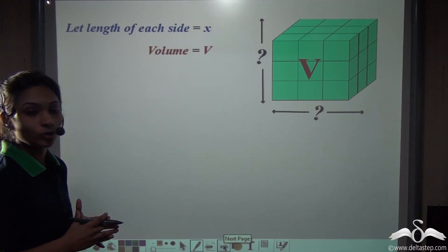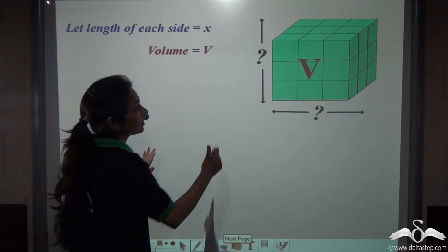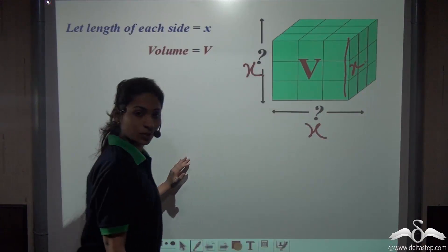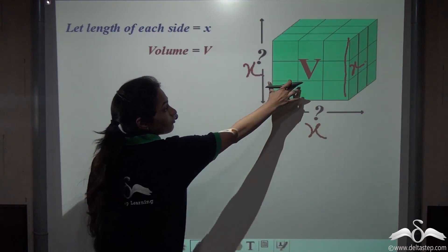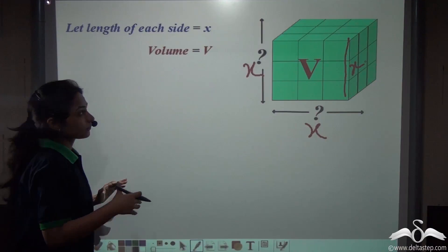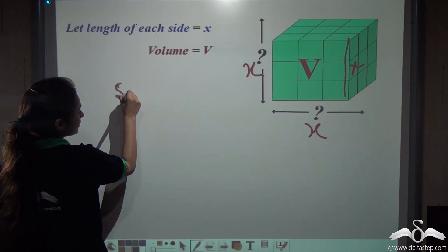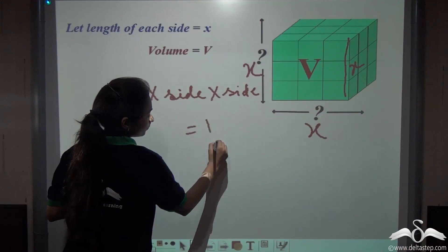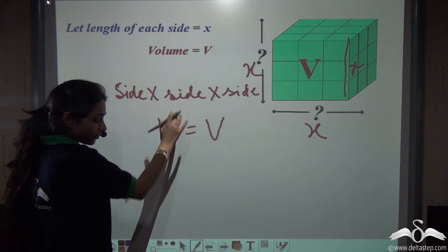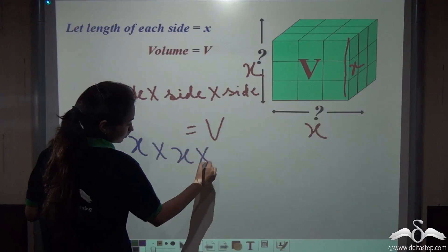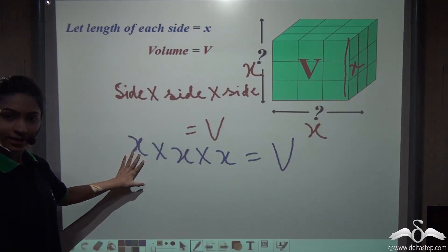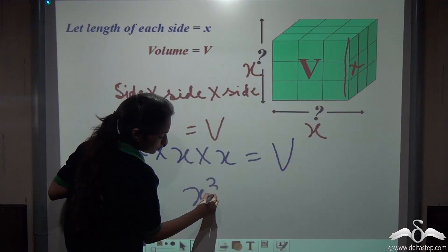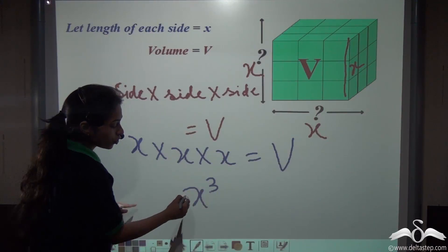Say if you have to find the volume of a cube, the length of each side measures x units and even the height measures x units. The volume is represented with the letter V, so the volume of this cube is V cubic units. You can say side into side into side equals volume of a cube — substitute side with x. So x into x into x, that is x cubed, equals V.